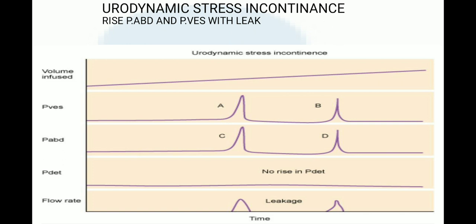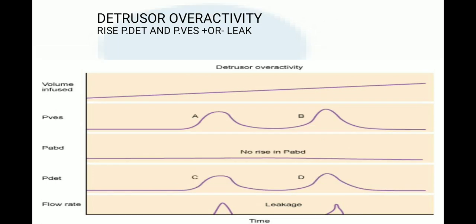The cystometry trace for stress urinary incontinence shows that during voiding the vesical and abdominal pressures increase together with episodes, with no increase in detrusor pressure, and leakage is seen in the flow channel. Stress urinary incontinence is therefore characterized by leakage with a rise in both abdominal and vesical pressure in the absence of a detrusor pressure rise. Stress urinary incontinence is diagnosed during the filling phase of urodynamics.